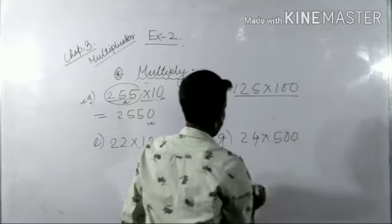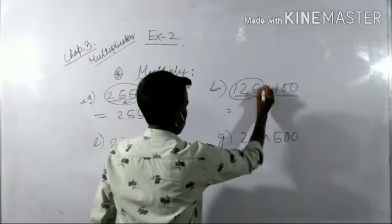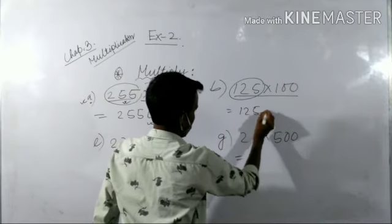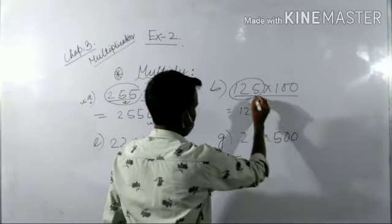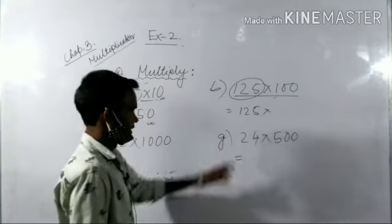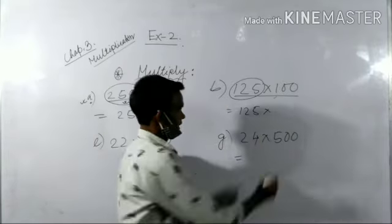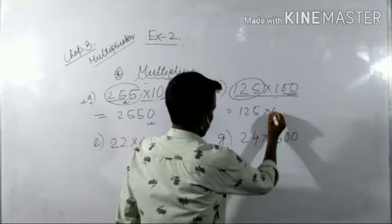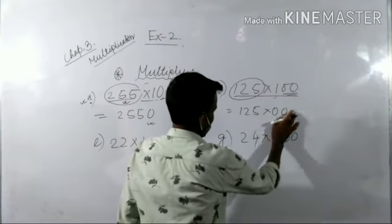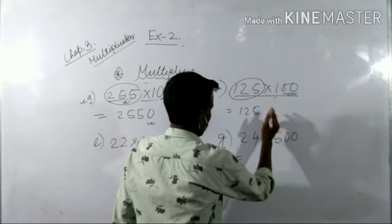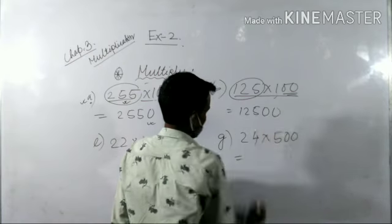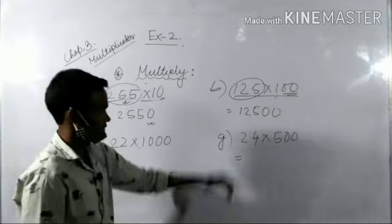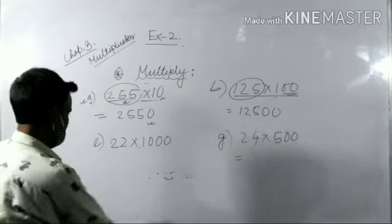Now look at number b. 125 is given here. So write 125. Now if you multiply 125 and 1, it will be 125. And how many zeros are given at last? Two zeros are given. So you just write two zeros at the end. This is your answer: 12500.